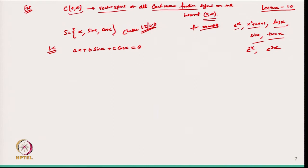I have taken the linear combination and set it equal to 0, where 0 is the zero function — the additive identity in C⁰∞. Now the question is how we can find the values of a, b, c because this is just one equation. We take the help of properties of these functions. Since x, sin x, and cos x are differentiable, I can differentiate equation 1 with respect to x.